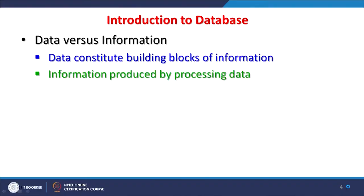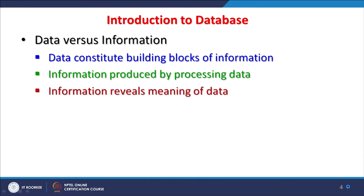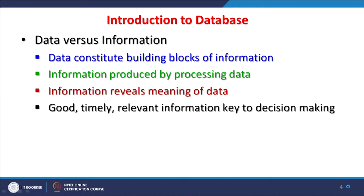Information is generated through data — data is the building block of information. Information is produced by processing data, which can be done easily in a conventional database if it is attribute data. But if it is GIS or spatial data, it can only be done on a GIS platform. When we process the data, these raw facts can reveal quite good information, and when we do this processing in GIS, we can finally convert data into knowledge.